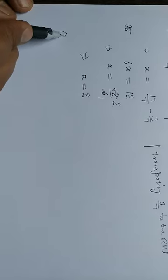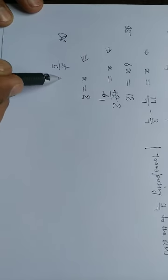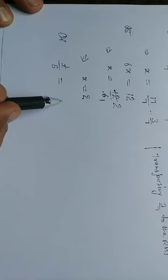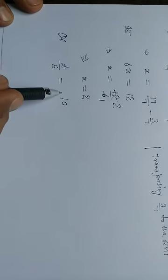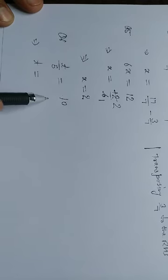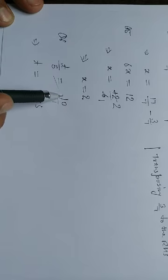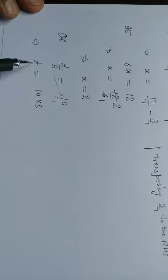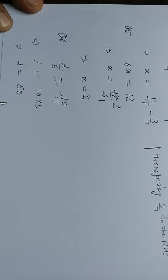Question number 6: t upon 5 is equal to 10. We cross multiply. Cross multiplication gives t into 1 equals 10 into 5. So that implies the value of t is equal to 50.